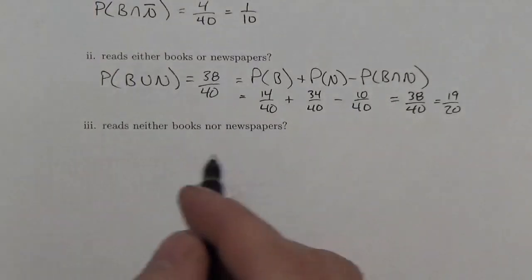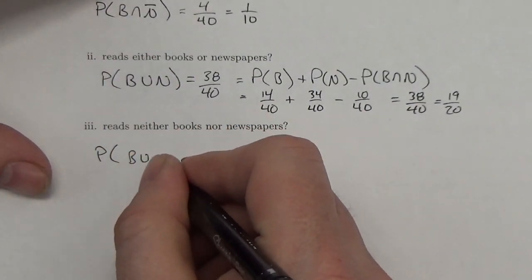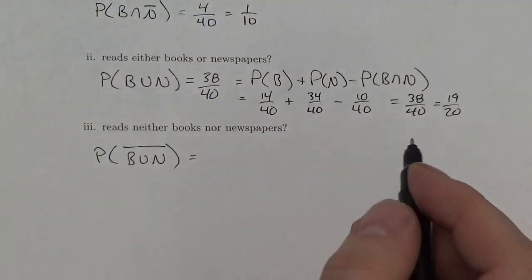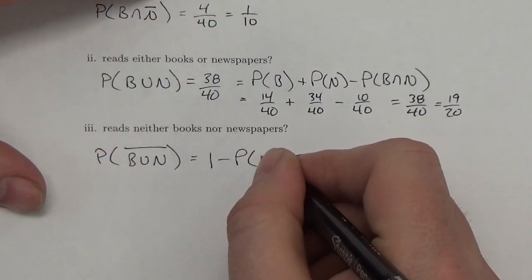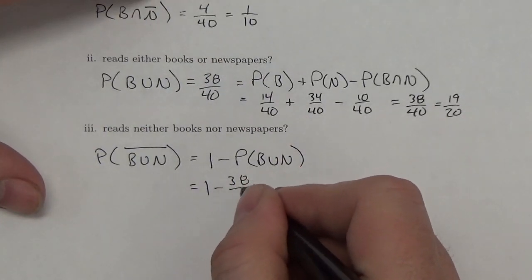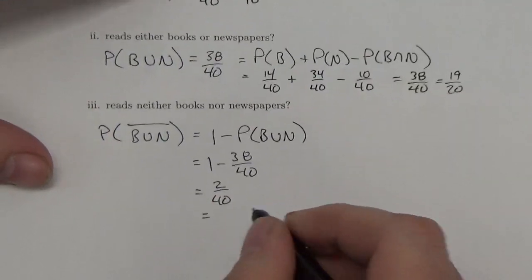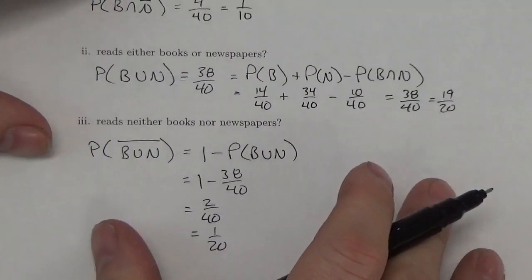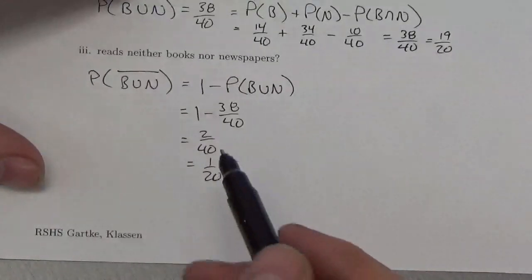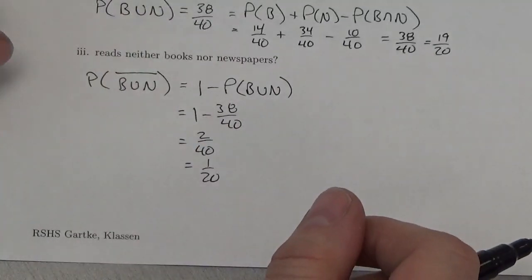What is the probability a person reads neither books nor newspapers? This is the complement of P(book union newspaper). P(neither) = 1 − 38/40 = 2/40 = 1/20. Or, looking directly at the Venn diagram, there are 2 people outside both sets, giving 2/40 = 1/20.